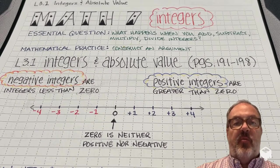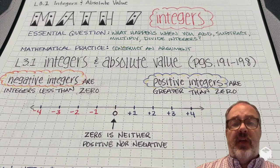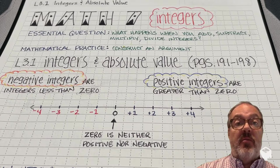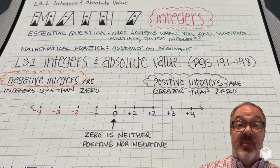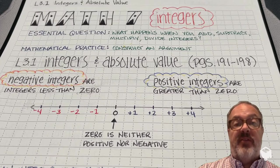In lesson 3.1, integers and absolute value, we're going to look at both positive and negative numbers. And just so that you know, all the negative numbers are going to be less than 0, and the positive numbers are going to be greater than 0.